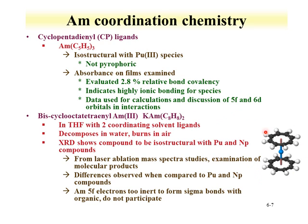The ring structure with the cyclooctatetraene ligand — the bis compound — has been examined for americium and shown to be isostructural with both plutonium and neptunium compounds. Differences are observed in some of the spectroscopy compared to plutonium and neptunium. There is an indication that the 5F electrons in americium are unable to form sigma bonds with the organic ligand and do not participate, unlike the lighter actinides.